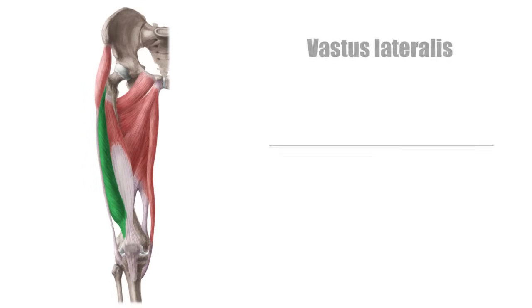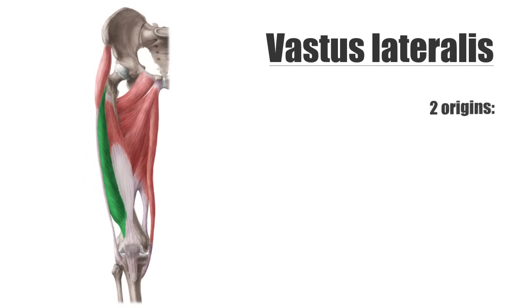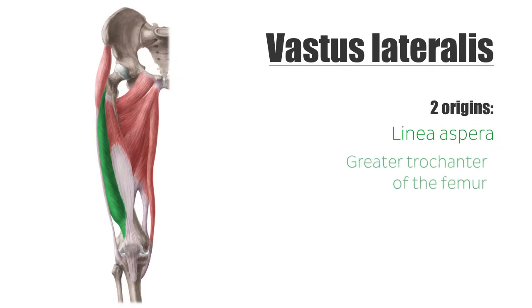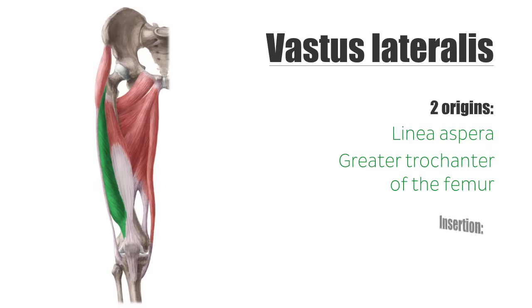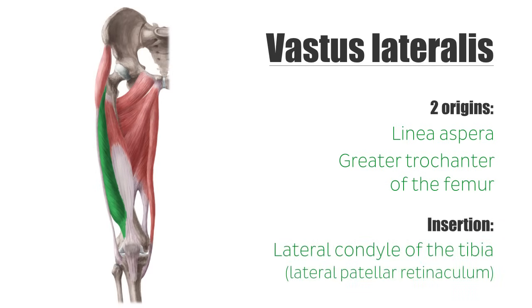The vastus lateralis muscle originates at the linea aspera and greater trochanter of the femur, loops around the shaft, and mainly runs into the quadriceps tendon. Mirror inverted to the vastus medialis muscle, a small part goes around the patella laterally and inserts at the lateral condyle of the tibia, also known as the lateral patellar retinaculum.